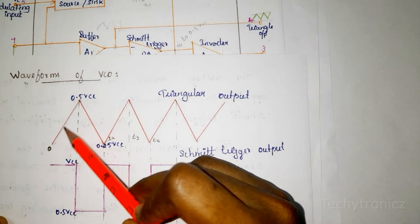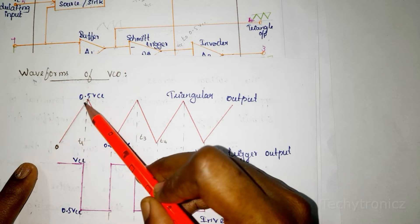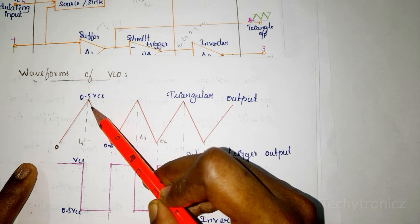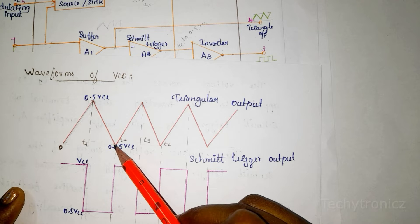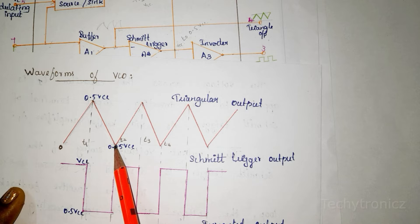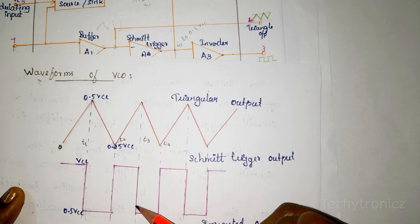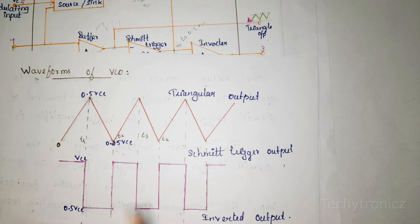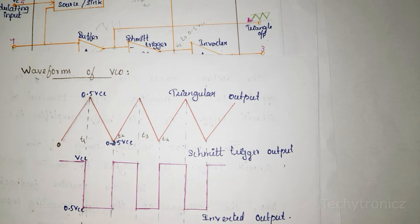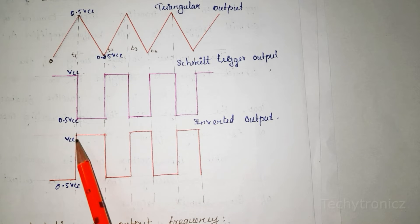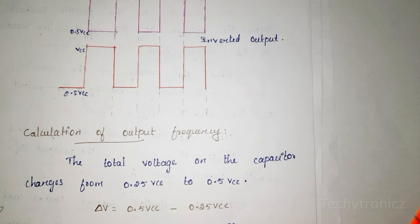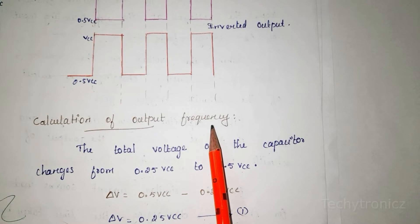Looking at the graph: when the voltage on the capacitor exceeds 0.5 VCC during charging, the output of the Schmitt trigger goes low, and the capacitor now discharges. When it reaches 0.25 VCC, the output of the Schmitt trigger goes high. This repeats, so the Schmitt trigger operates between two levels: VCC and 0.5 VCC. The Schmitt trigger output is given to an inverting amplifier, giving inverted output in the range VCC to 0.5 VCC.